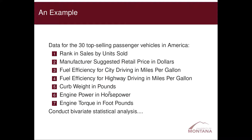Here's an example of a modeling project we do in class. Suppose I gave you data for the 30 top-selling passenger vehicles in America — including rank in sales, manufacturer suggested retail price, fuel efficiency for city and highway driving in miles per gallon, curb weight in pounds, engine horsepower, and engine torque — and asked you to conduct a bivariate statistical analysis to see which of any two of these variables is associated with one another.